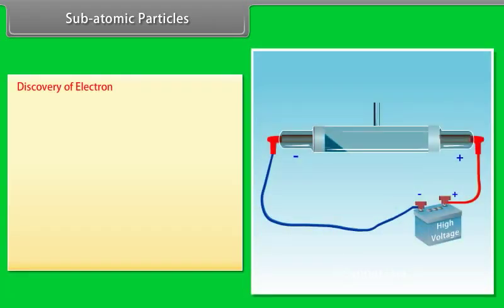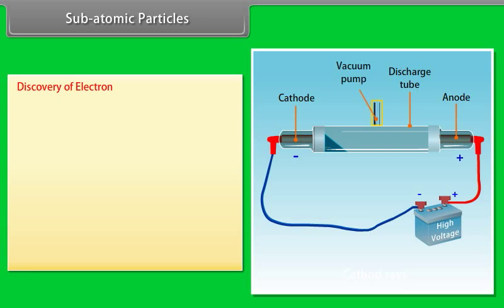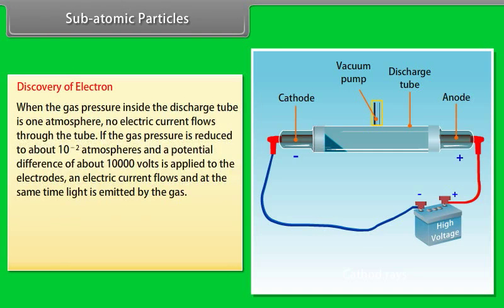Subatomic particles — Discovery of electron. A discharge tube is a long glass tube fitted with metal electrodes on either end, across which high voltage can be applied. The tube is connected to a vacuum pump for controlling the pressure of gas inside. There is a coating of phosphorescent material behind the anode. When the gas pressure inside the discharge tube is 1 atmosphere, no electric current flows through the tube.